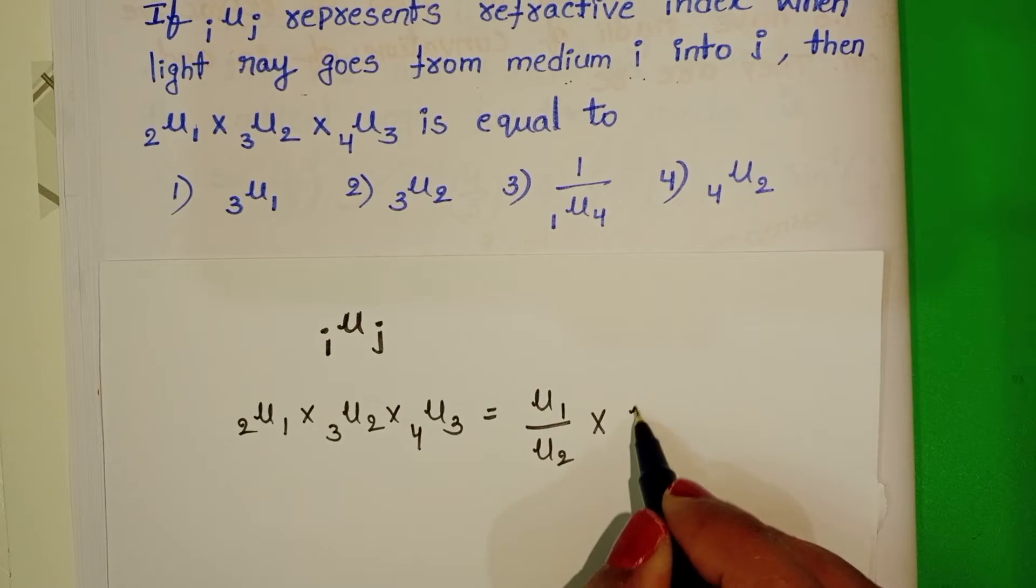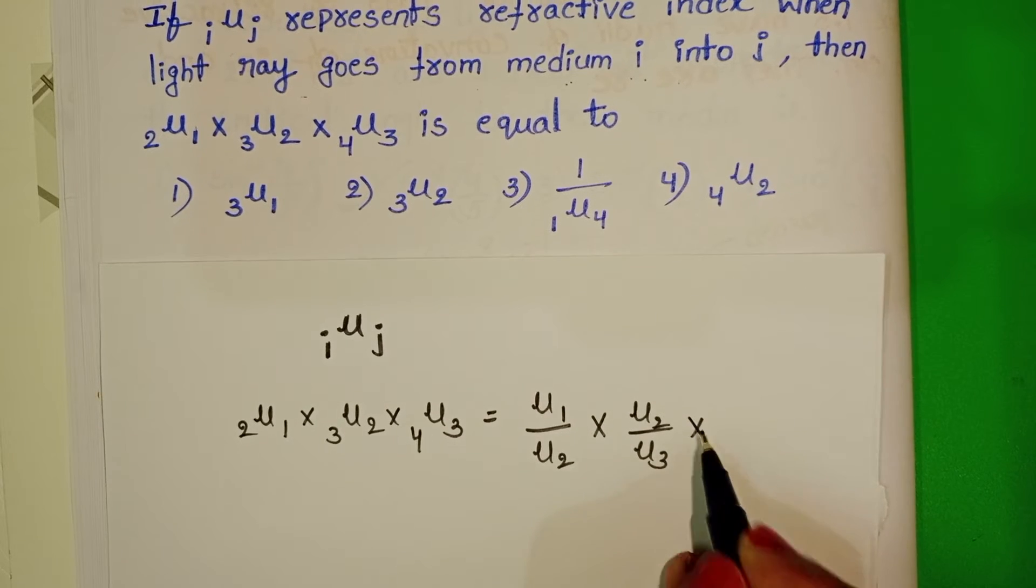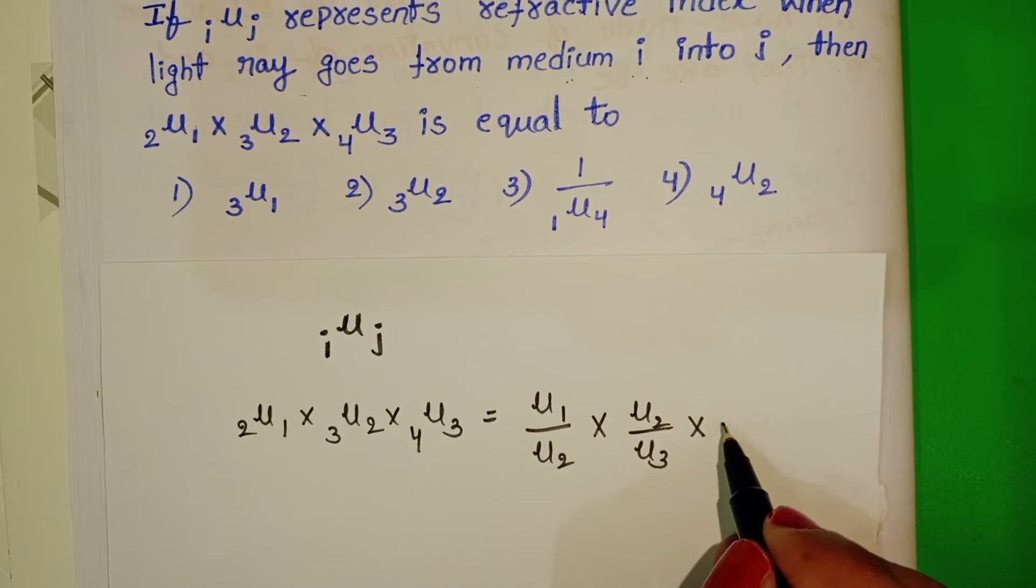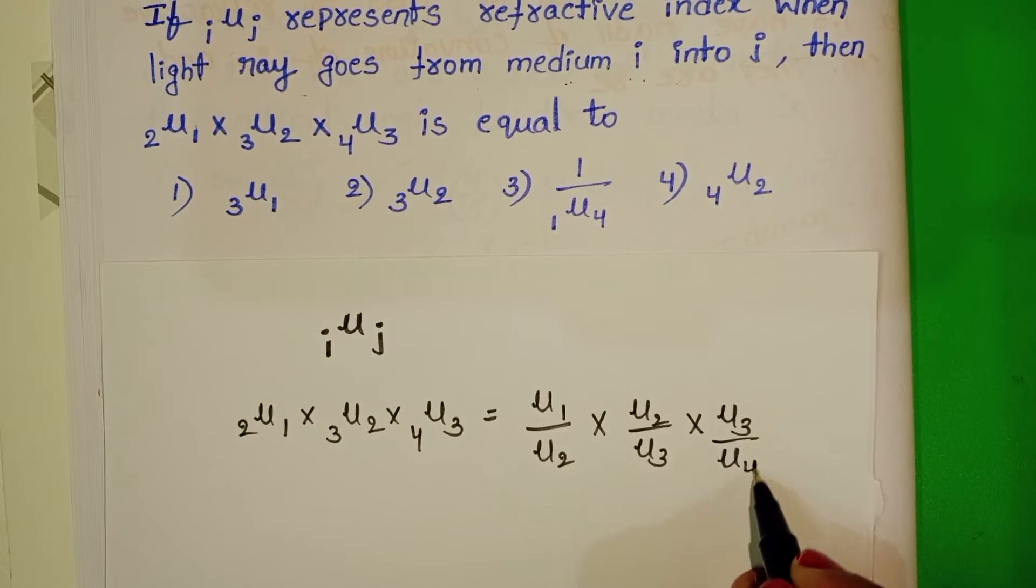Mu 23, refractive index of second medium to the third medium. Mu 34, refractive index of third medium to the fourth medium.